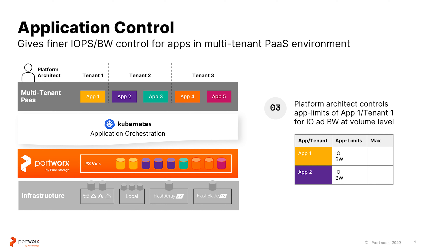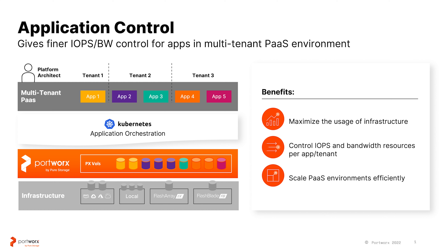To avoid this noisy neighbor scenario, Application Control allows platform architects to set maximum limits for IOPS — read and write — or bandwidth — read and write — in terms of megabytes per second. This allows platform architects to define how much resources are available for each application or tenant running on a shared Kubernetes cluster. Application Control allows platform architects to control the